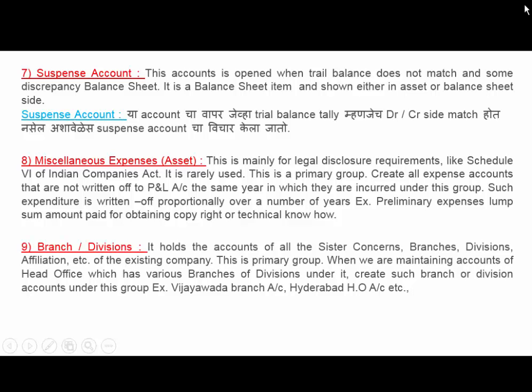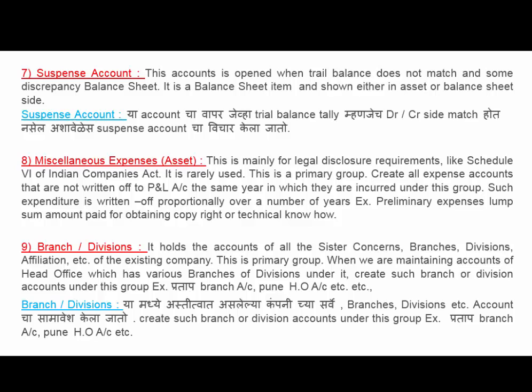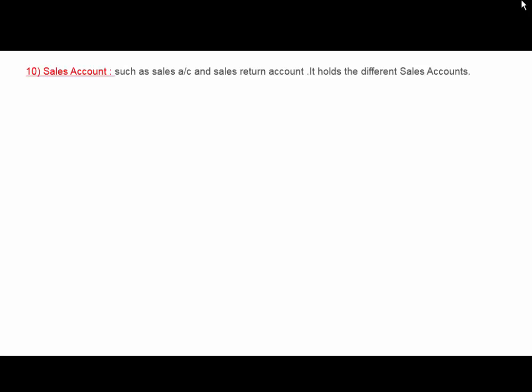Next is Branch and Division. It holds accounts of all sister concerns, branches, divisions, affiliations, etc. of the existing company. This is a primary group where accounts of a head office with various branches or divisions are maintained. Create such branch or division accounts under this group — for example, Pratap Branch Account or Pune Head Office Account.